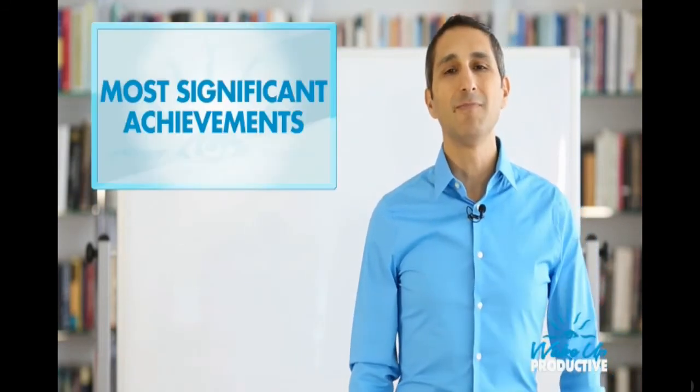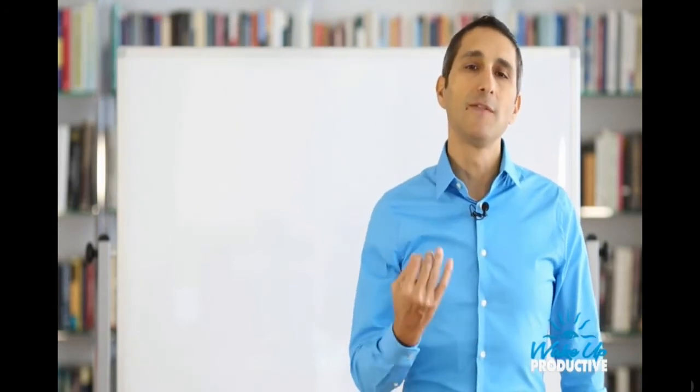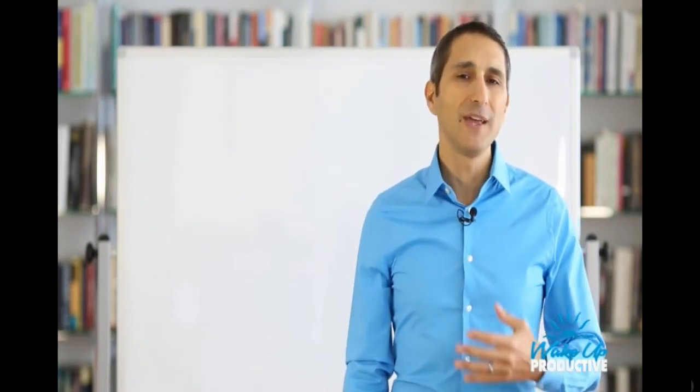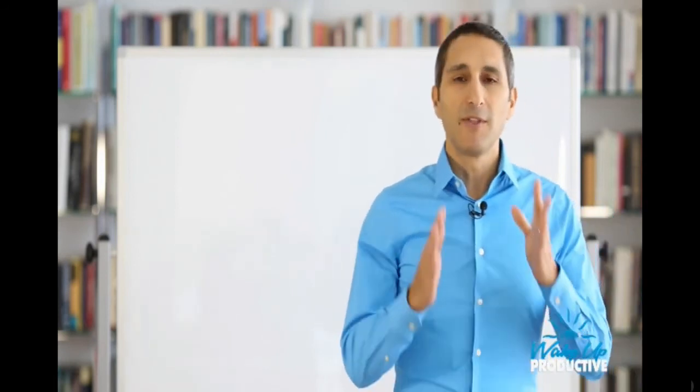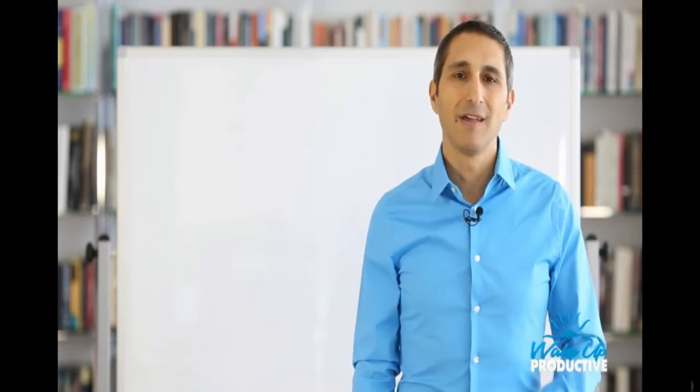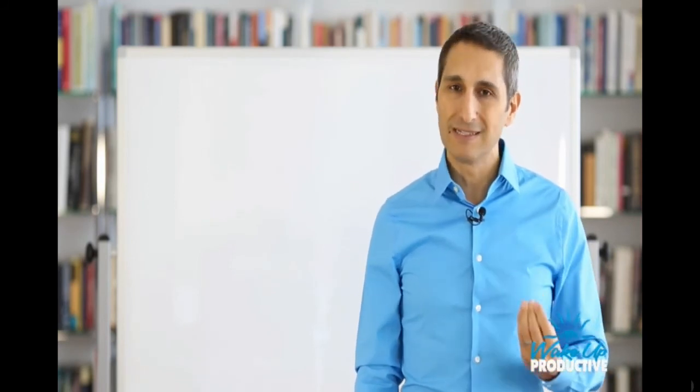The second exercise is make a one page list of your most significant achievements in your life. One page, all of the most significant achievements. And they're things that are significant to you, not to others. Now maybe you did something that was significant to someone else and that made you feel good too, but it's the things that when you look back on you are most proud of, they make you feel the best about yourself. Make a list of one page of your achievements, review it, and then notice how you feel inside when you look them over.